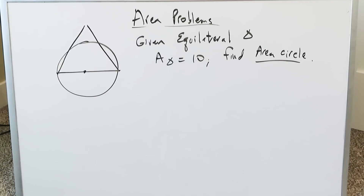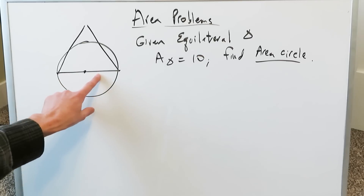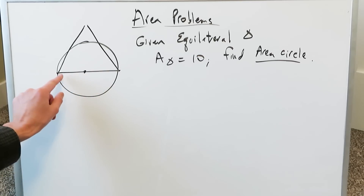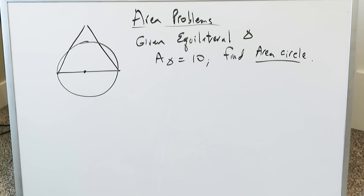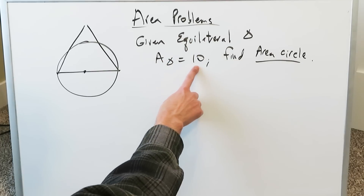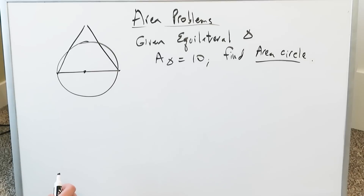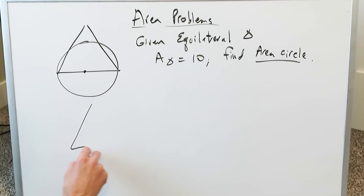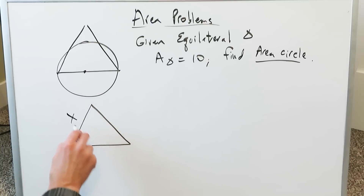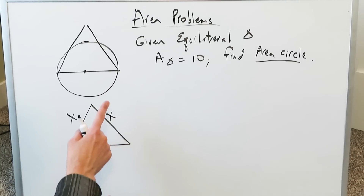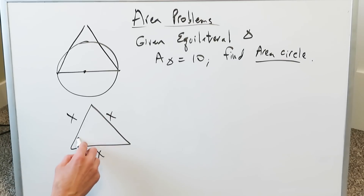Let's look at the second and last question. We have a circle with its diameter and center forming one side of an equilateral triangle. Given that the equilateral triangle has an area of 10, we have to find the area of the circle. We're going to use the triangle to determine the area of the circle, so let's pluck out the triangle.